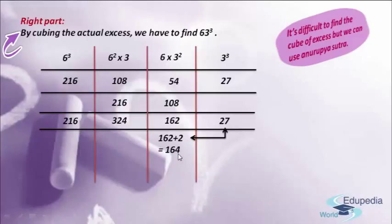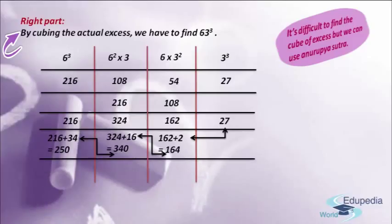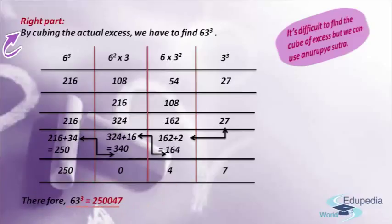Since 164 is a three-digit number, we take the digit in the one's place, that is 4, and the remaining number 16 is taken as carry-on to the second part. Adding 16 to 324, we get 340. Again, 340 is a three-digit number, so we take 0 in the one's place and send the remaining 34 as carry-on to the first part, adding with 216. By adding 216 with 34, we get 250. In the first part we can have as many digits as we want. Combining all answers — first: 250, second: 0, third: 4, fourth: 7 — we get 63 cube equals 250,047. This 250,047 is the required right part.